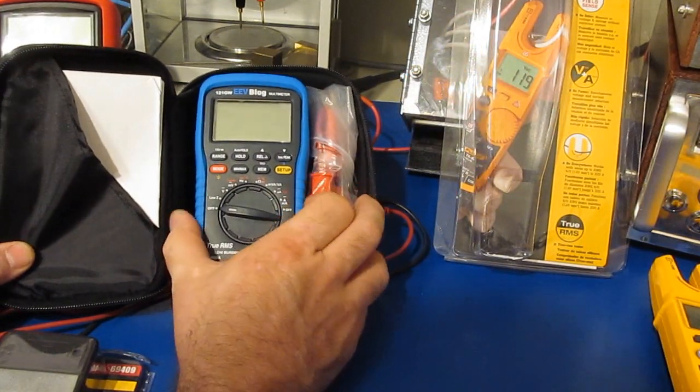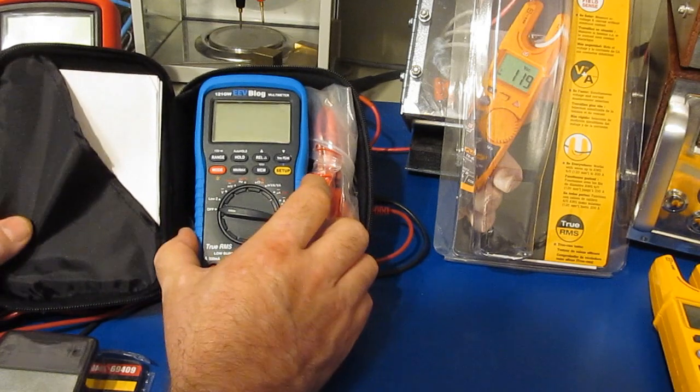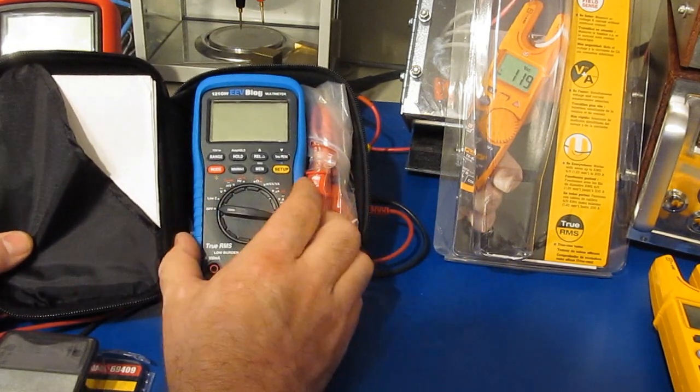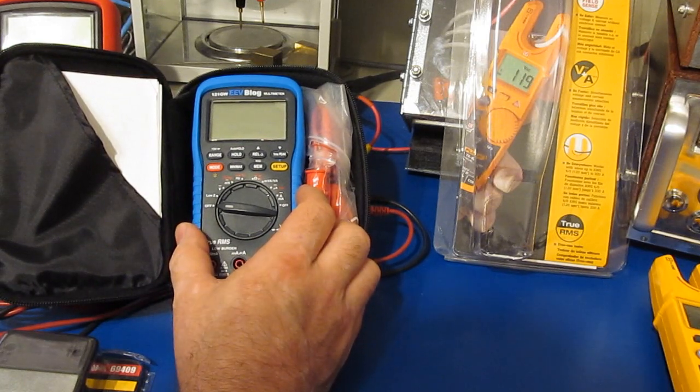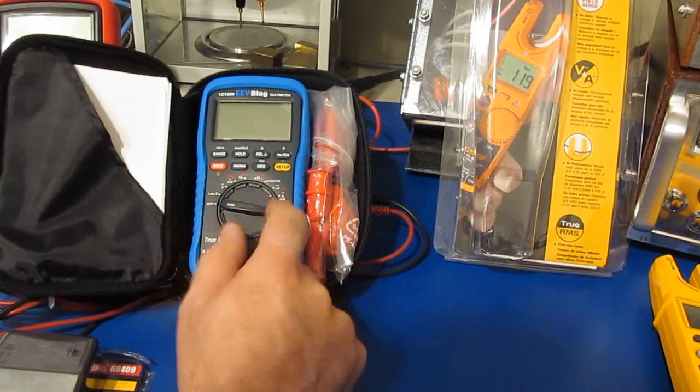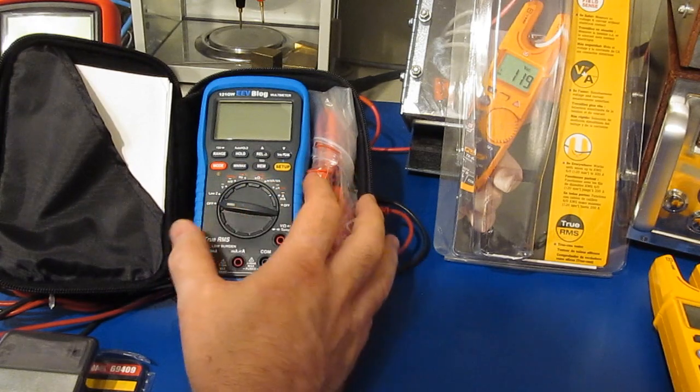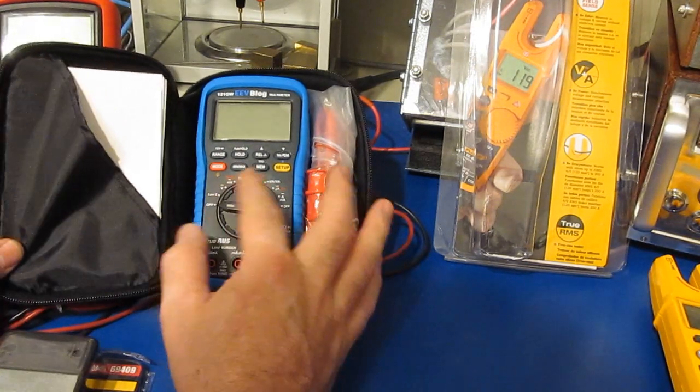So recently there's been some posts up on the EV blog where there was a person that had joined the Kickstarter. They had received their meter and they've damaged it. I believe they're probably the first one that's actually damaged their meter outside of the problems that everybody else is having with the switch.